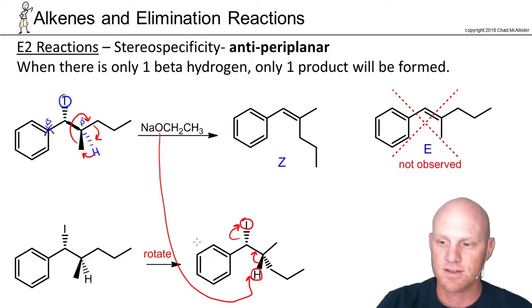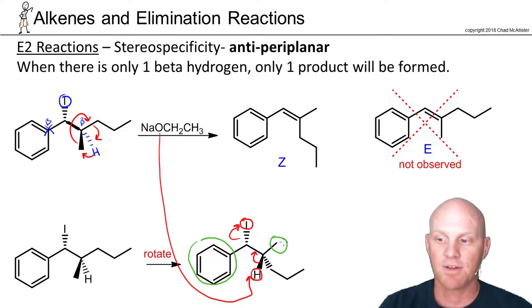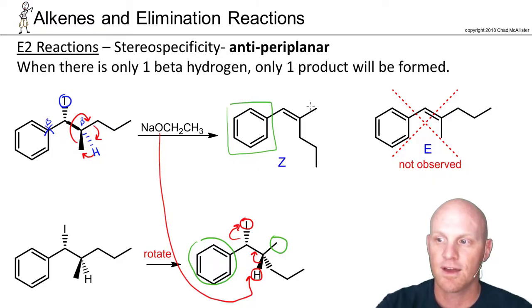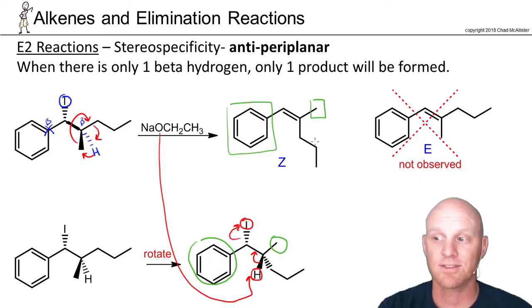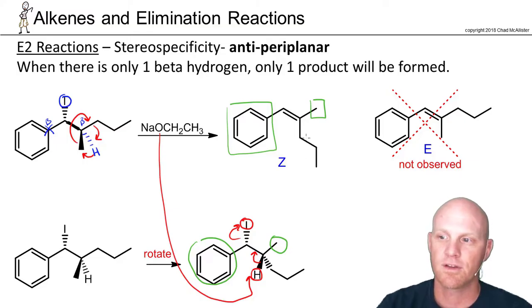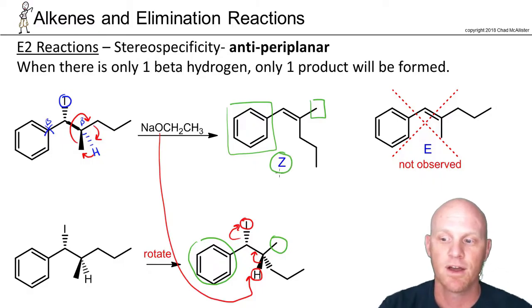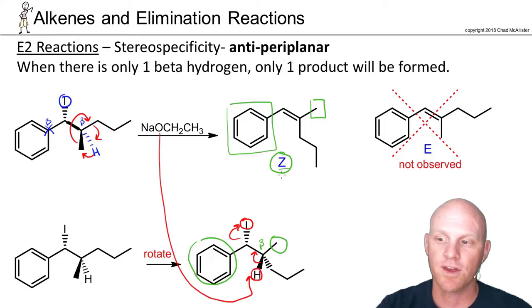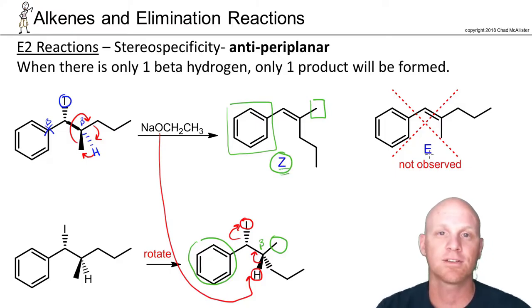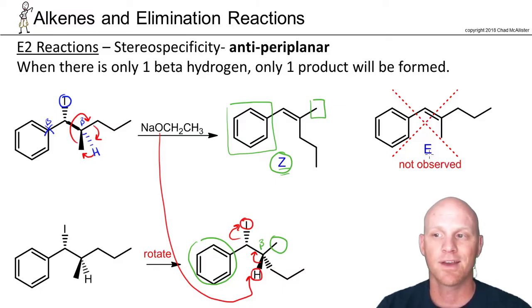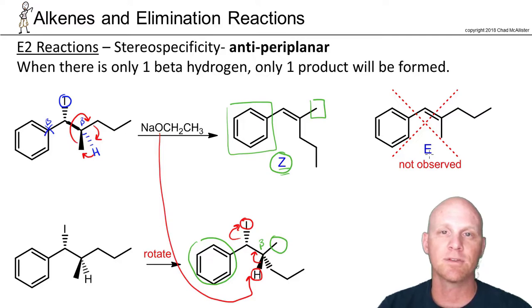Looking at the product: the benzene ring and the methyl group are 180 degrees opposite, so they get locked trans to each other. However, the benzene ring has priority on its side, while the propyl group has priority on the other side — so this is actually the Z isomer. With only one beta hydrogen, we only get one product: just the Z, not the E. This is the consequence of the stereospecificity of an E2 reaction — the H and the leaving group must be antiperiplanar.